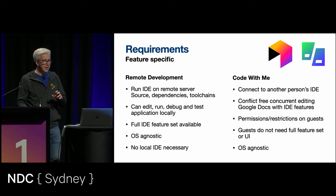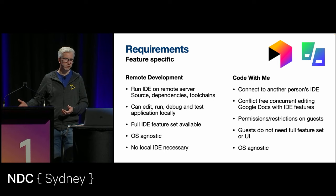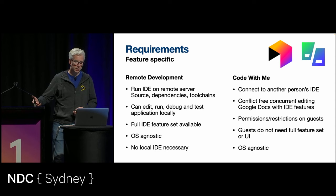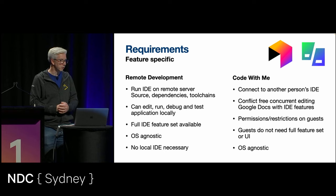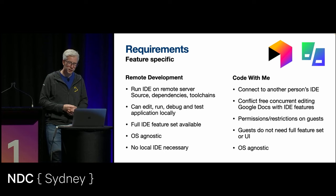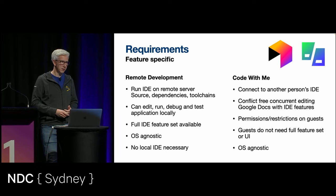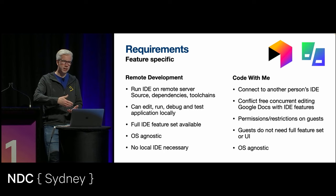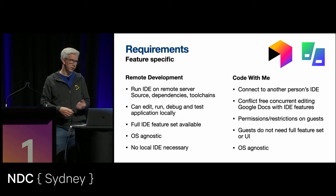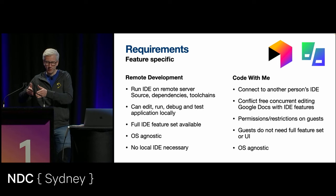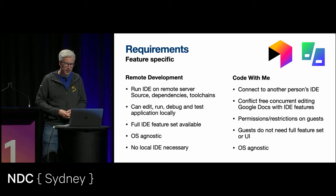Code With Me has slightly different requirements. You're connecting to another person's IDE — you're working collaboratively with someone, connecting to somebody else's interactive IDE. You need conflict-free concurrent editing, like Google Docs but with IDE features — code completion, syntax highlighting, inspections. You want to provide permissions and restrictions for guests, such as read-only access. A key difference is that guests don't need the full feature set. If I'm joining as a guest, I don't need to change settings or JVM configuration — only the host needs to do that. That's actually why Code With Me was implemented first: we could ship it by implementing fewer features.